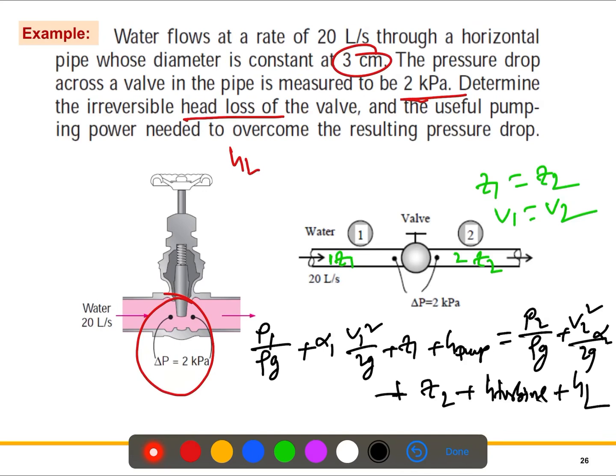So here, the velocity v1 and v2 are the same, we can cancel it out. The elevation z1 and z2 are the same, so we can cancel it out. We do not have any turbine for this case, so cancel this. We do not have any pump, so we can cancel it out.